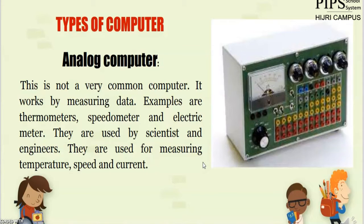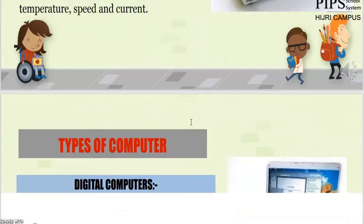A galvanometer measures voltage, a speedometer measures speed — which we see in our cars measuring 30 or 40 kilometers per hour. A thermometer measures temperature. These are analog computers; they give results in analog form.